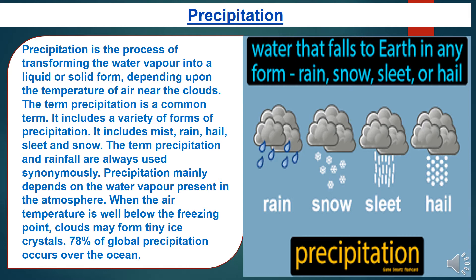The first component is precipitation. Precipitation is the process of transforming water vapor into a liquid or solid form depending upon the temperature of air near the clouds. It includes a variety of forms such as mist, rainfall, hail, sleet, and snow. The term precipitation and rainfall are often used synonymously. Precipitation mainly depends on the water vapor present in the atmosphere. When the air temperature is well below the freezing point, clouds may form tiny ice crystals. 78% of global precipitation occurs over the ocean.